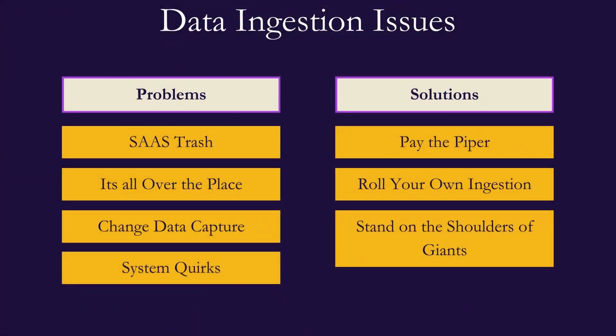Most of us who have done data engineering for a while know that doing replication and ingestion into your data warehouse isn't as trivial as it would initially seem, and this can be frustrating, especially when communicating with stakeholders to scope out how long it would take to ingest a new source. It isn't a matter of pressing a few buttons, and the issue often stems from the SaaS tools we've become accustomed to over the past 10 years.